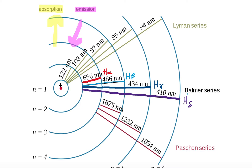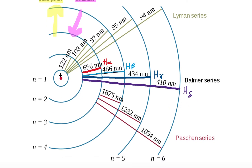Similarly with H delta: if an electron were located in the n equal to 6 state and transitioned down to the n equal to 2 state, it would emit a violet colored photon of 410 nanometer wavelength, and we would identify that as H delta. If however the electron were located in the n equal to 2 state and absorbed this purple or violet H delta photon of wavelength 410 nanometers, the electron would then move upward to the n equal to 6 state.